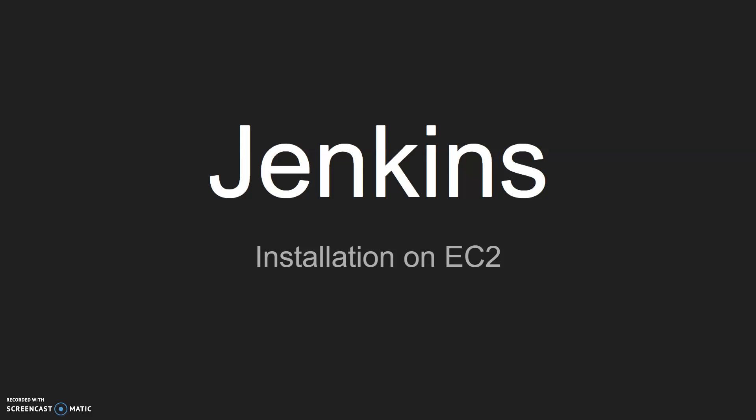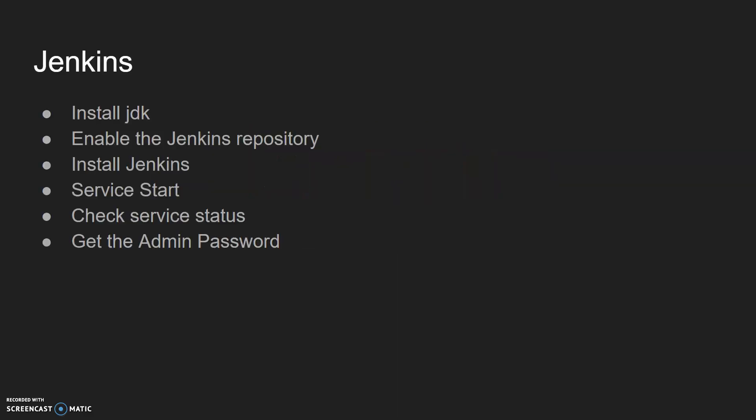What things do we have to take care of while installing Jenkins? We have to take care of the JDK version installation which should be compatible with the Jenkins version. Then we will enable the Jenkins repository and GPG keys for installing Jenkins. Then starting the Jenkins service and checking the service. After that we will take the admin password from the console and login with the admin user.